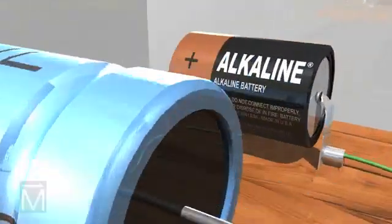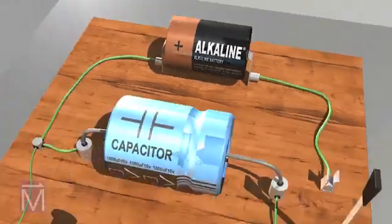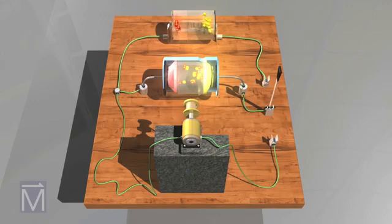A capacitor is similar to a battery in that both store electrical energy, but a capacitor is a much simpler device that can't produce new electrons. It only stores them.